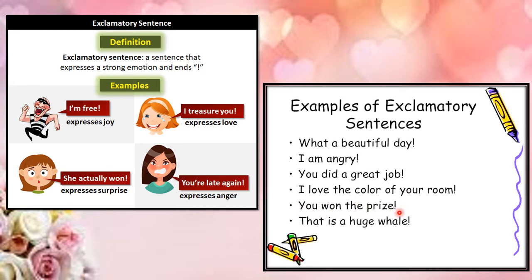'You won the prize!' and 'That is a huge whale!' are also exclamatory sentences. So, an exclamatory sentence is a type of sentence where we express strong emotions and strong feelings of happiness, excitement, anger, joy, surprise, and so on. With this type of sentence, we use exclamation mark.